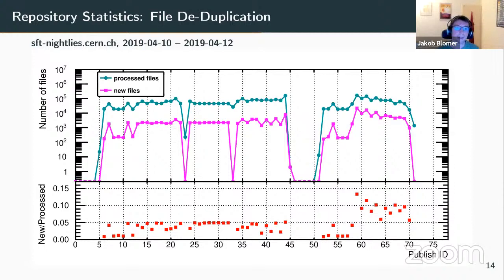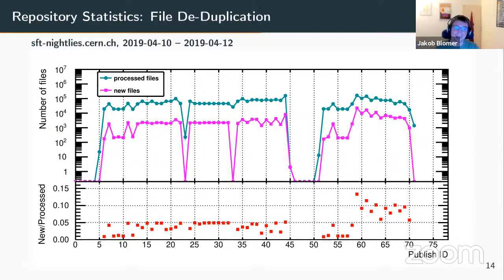The data deduplication is actually quite useful. This example is from one of our nightly build nodes. On the x-axis is the publish ID — every point is a publish operation — and on the y-axis is how many files were published in that operation. On the logarithmic scale, you see the number of processed files versus the number of actually new files in purple. Most files published happened to already be in the repository under a different path — only a few percent are new. This is very typical for software: if you release version 53 and we already have versions 1 to 52 installed, not that many files are actually new.